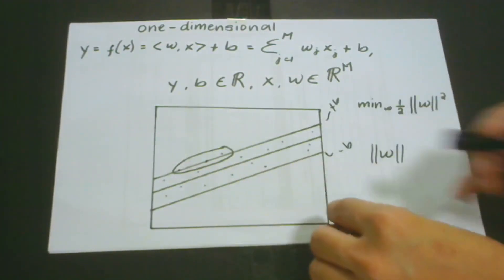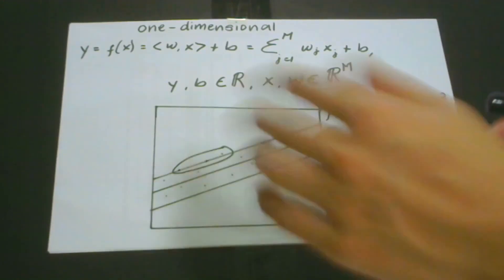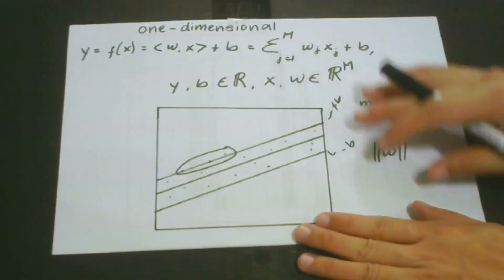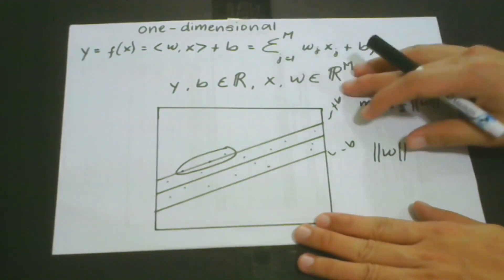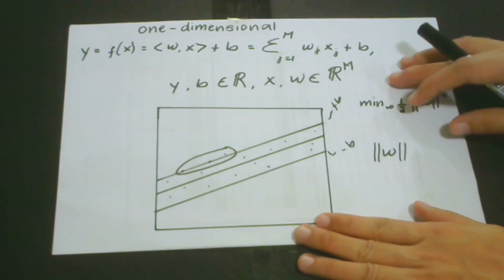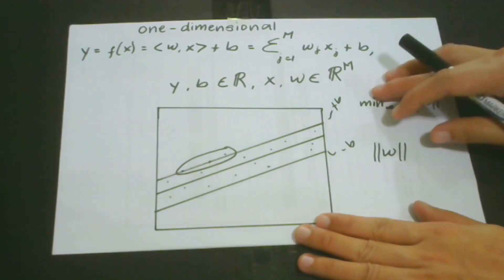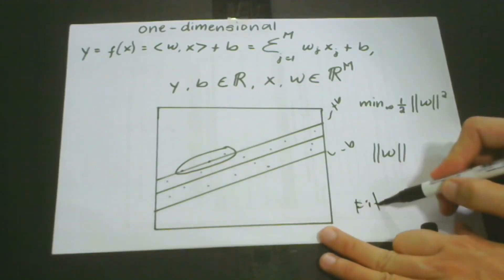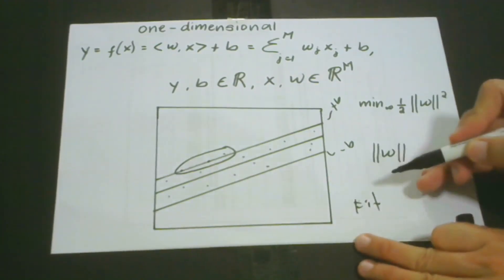The basic idea about support vector regression that we must not forget is that in this algorithm, we always try to fit the error within a certain threshold. There are certain boundaries that we have to consider wherein our error must fit within this region.